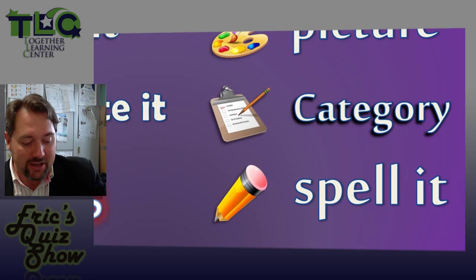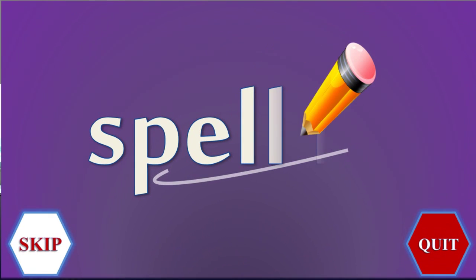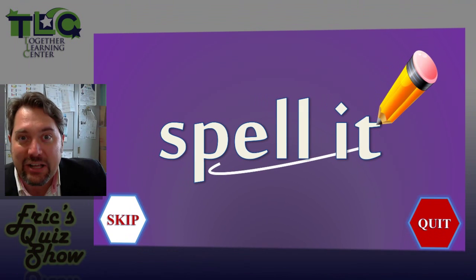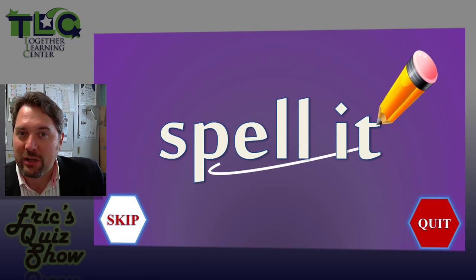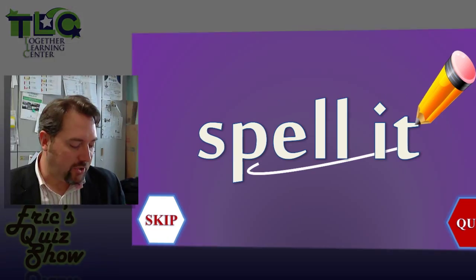And it's just like it sounds. You will have to write and spell a word in English correctly to obtain a point. And for that you'll need your mini whiteboard.